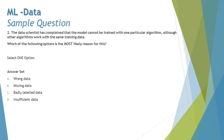Moving on to question number two: a data scientist has complained that the model cannot be trained with one particular algorithm, although other algorithms work with the same training data. We need to find the reason behind this complaint.